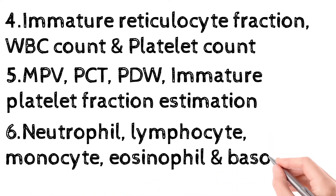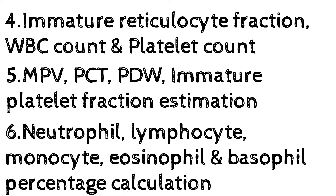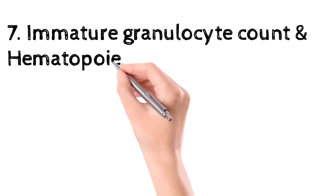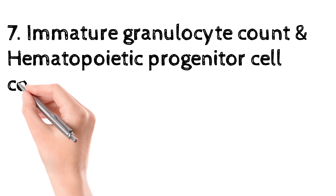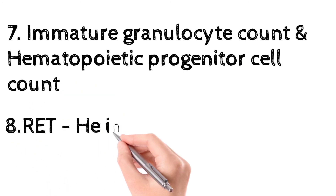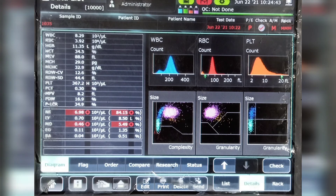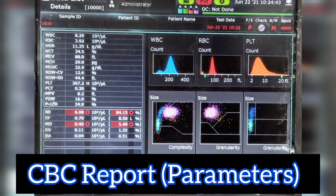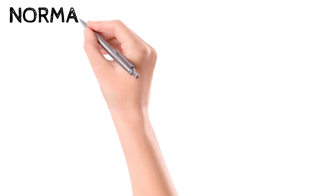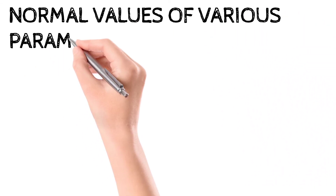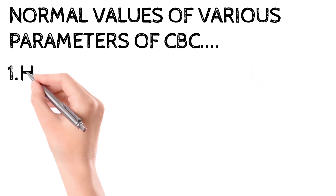Fifth, you can estimate MPV, PCT, PDW, and immature platelet fraction. Sixth, differential count — percentage neutrophil, lymphocyte, monocyte, eosinophil, and basophil — can be calculated. Seventh, immature granulocyte count and hematopoietic progenitor cell count. There is also an image showing various parameters detectable in CBC — WBC, RBC, hemoglobin — demonstrating the various parameter estimations in the CBC.